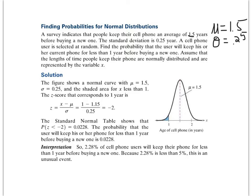A cell phone user is selected at random. Find the probability that the user will keep his or her phone for less than one year before buying a new one. Assume that the length of time people are given for their phone are normally distributed and are represented by the variable x. So we want to know when x equals 1, because we want to know when the length of time somebody keeps their phone is one year. Now if we just think about it, that's going to be below the average. The average or 50% of the people keep their phone for a year and a half and we're below the average. So our z-score should be less than zero.